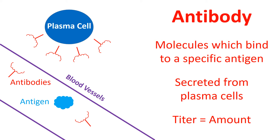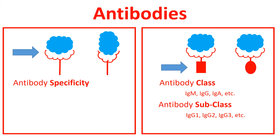For instance, a high titer of antibody means that you have a lot of that specific antibody. Antibodies have two important properties. The specificity of an antibody determines what the antibody binds to. For example, in the panel on the left, one antibody has a specificity for the wide portion of the antigen, while the other antibody has specificity for the narrow portion of the antigen.